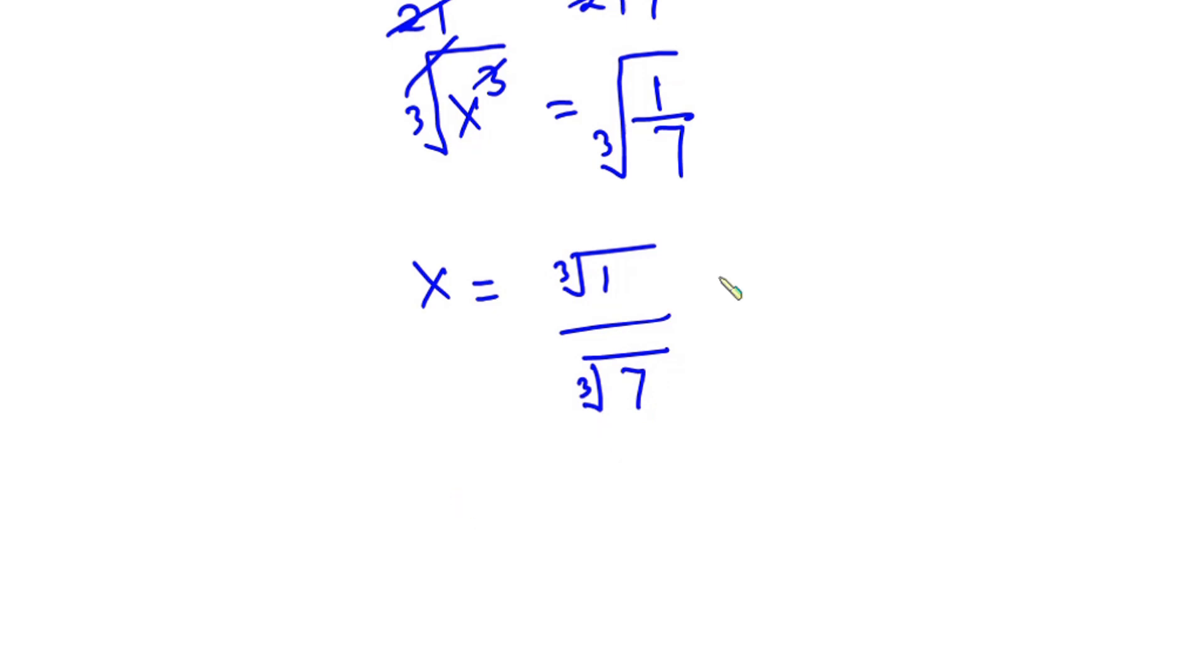So this implies that x is equal to, now cube root of 1 is still 1 over the cube root of 7. And this is our final answer.